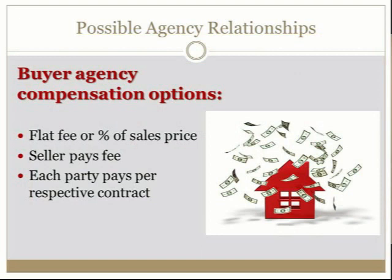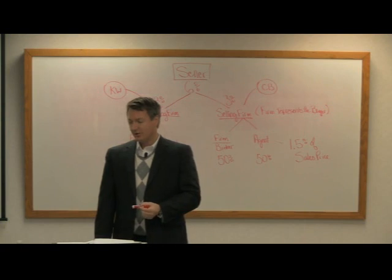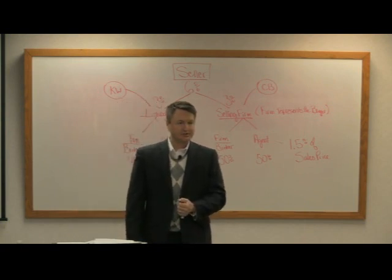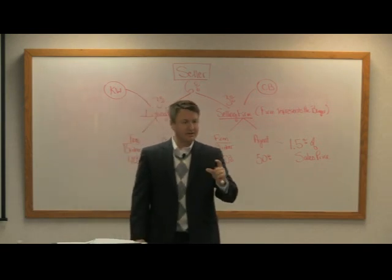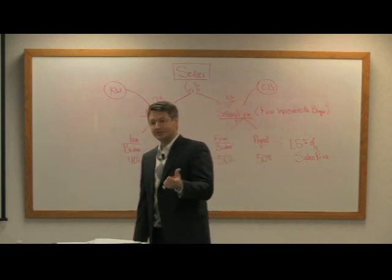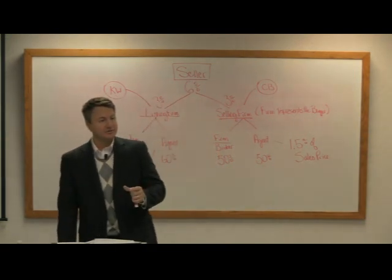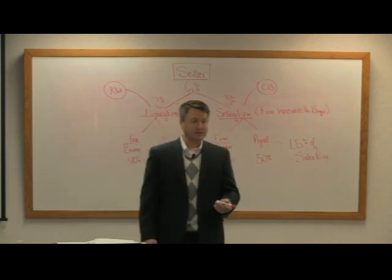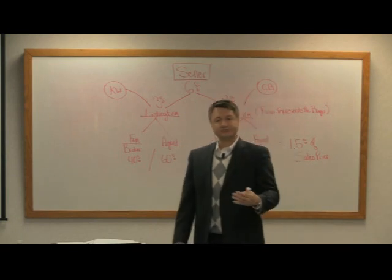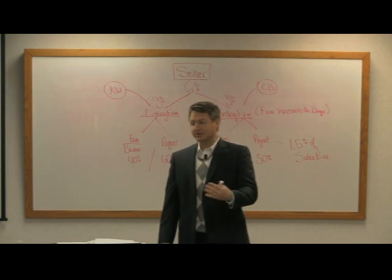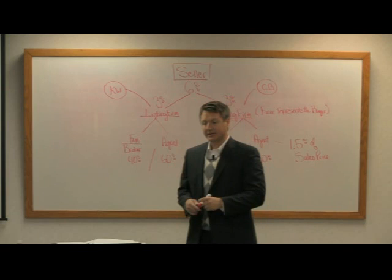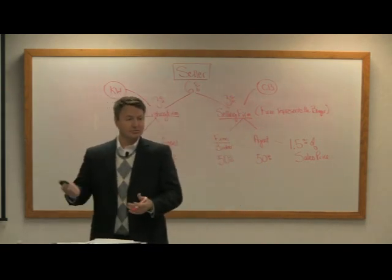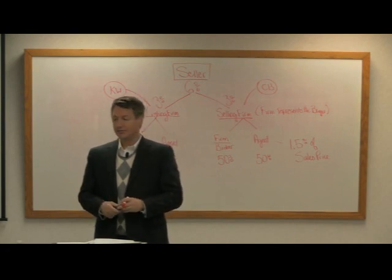Different ways buyer's agents can get compensated: a flat fee or a percent of the sales price; the seller can pay the commission; or each party pays their respective commission. In residential you'll mostly see a combination of the first two — a percent of the sales price charged and the seller pays that commission. The third option, where each party pays their respective agent, is more typical in commercial transactions, where it's not uncommon for the buyer to pay their commercial agent directly.